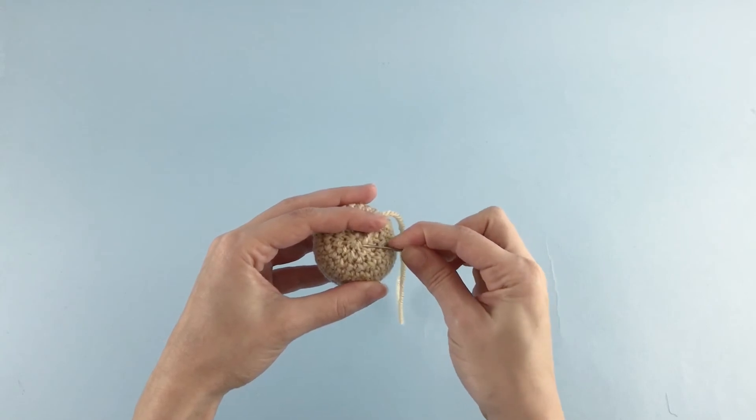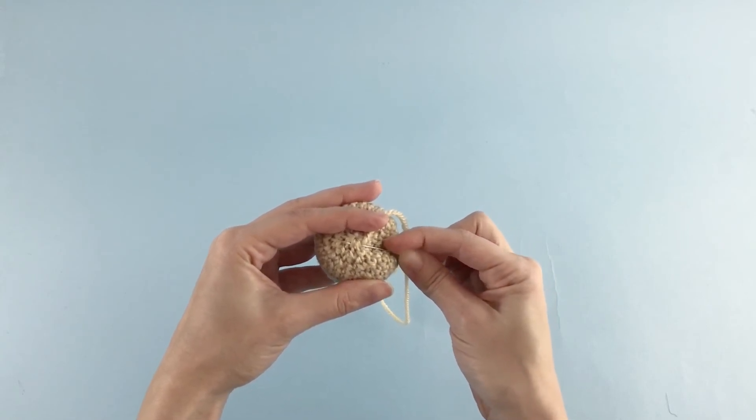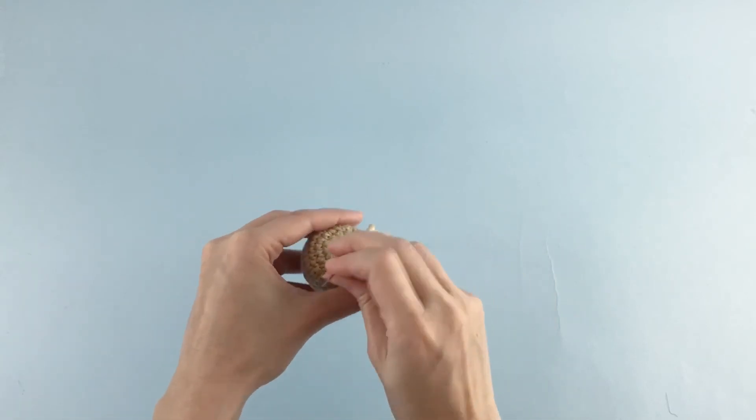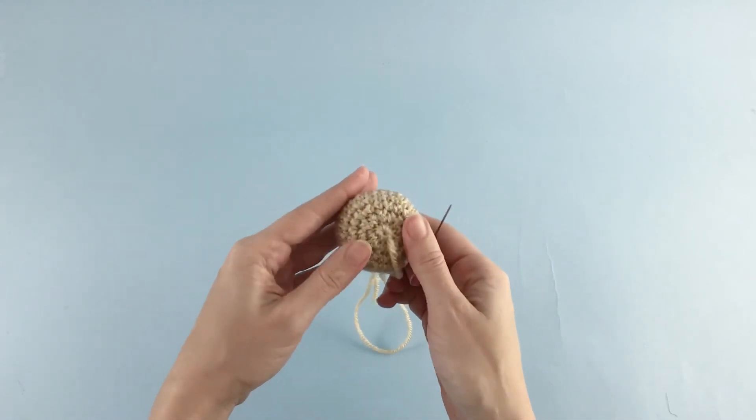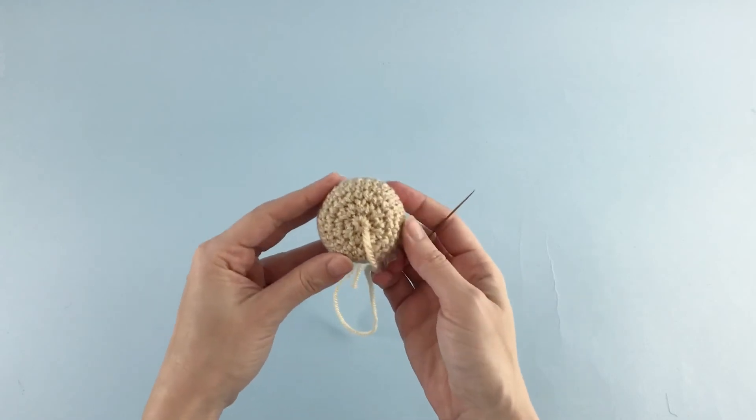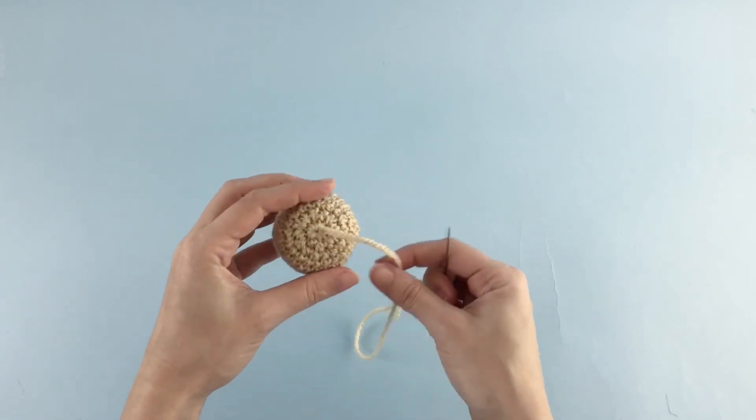The secret here is to have 12 stitches on your last row. This is very important because this is what is going to make it look even and nice. Most looking like the beginning because the beginning is very neat.